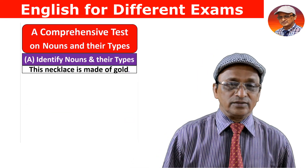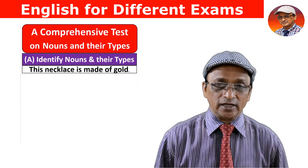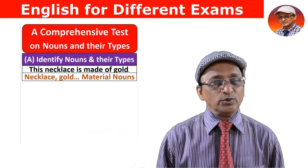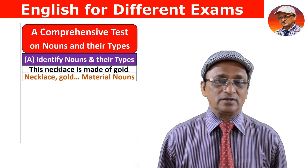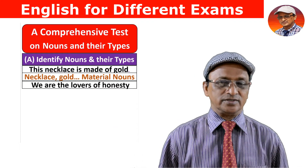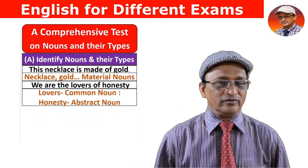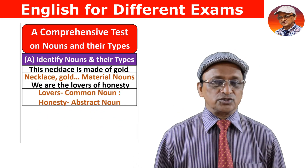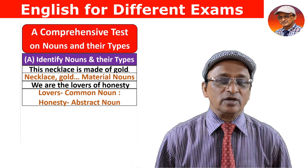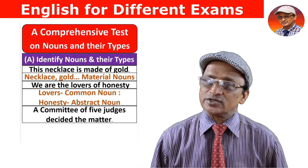Let's identify nouns in sentences and put them in different categories. First sentence: 'This necklace is made of gold.' Necklace is a noun and gold is also a noun — both come under material nouns. Second sentence: 'We are the lovers of honesty.' Lovers is a common noun and honesty is an abstract noun.